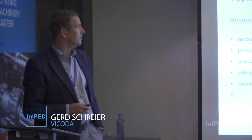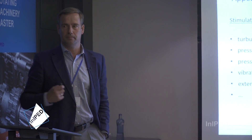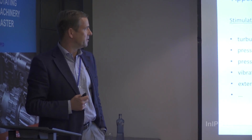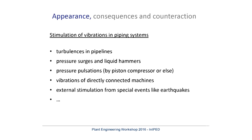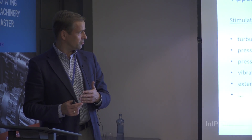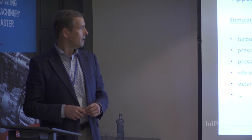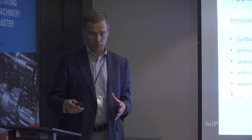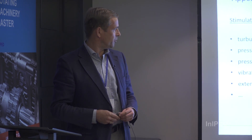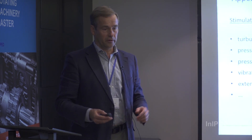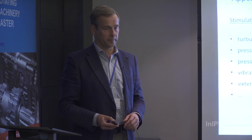If you excite a piping system — and it can be done very easily — what usually excites it is either turbulences on the pipeline, pressure surges if you open or close a valve, or a pump pushing fluid or sludge through the pipe system with a certain frequency. Vibrations can also come from a pump directly connected to the pipe system mechanically, or from external stimulation such as an earthquake or wind.